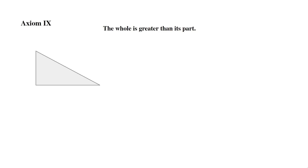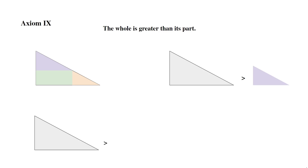Axiom 9: The whole is greater than its part. Here we have a gray triangle made up of a purple triangle, a green rectangle, and an orange triangle. The gray triangle is greater than the purple triangle, greater than the green rectangle, and greater than the orange triangle. The gray triangle is the whole, while the purple triangle, green rectangle, and orange triangle are its parts — so the gray triangle is greater than all of its parts.